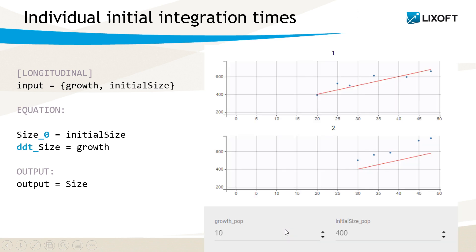This is the case here, the initial size of 400 corresponds to the prediction at time 20 for ID 1 and at time 30 for ID 2.